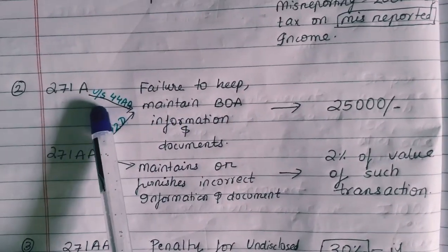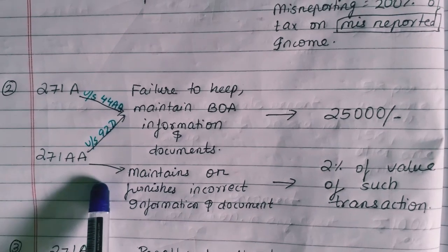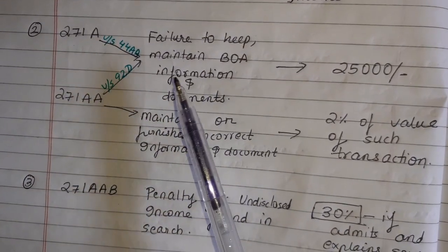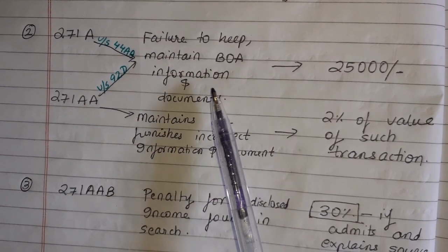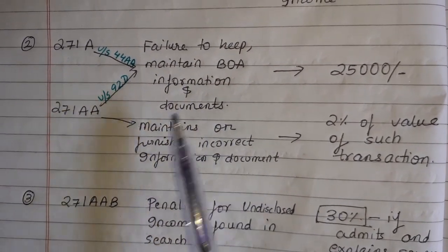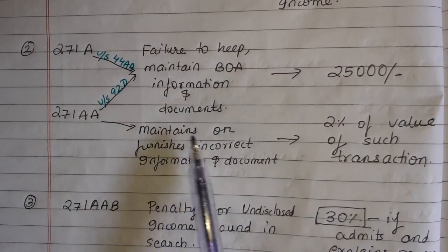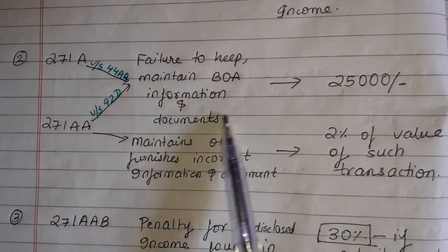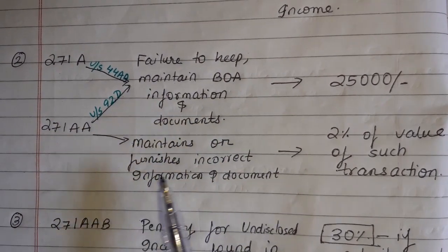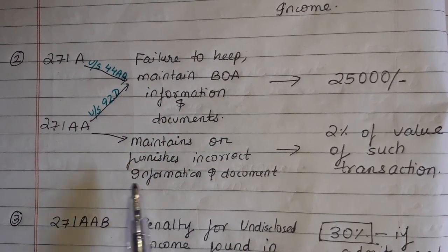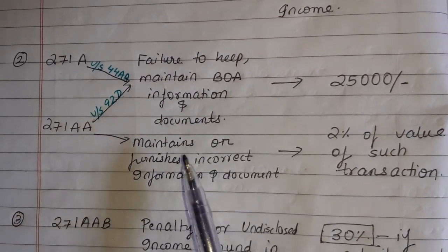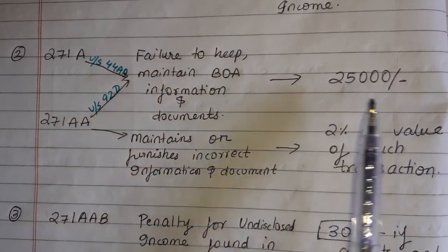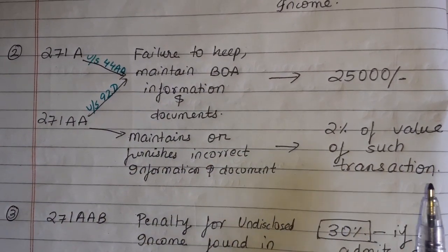Next is Section 271A and 271AA. Section 271A deals with failure to keep and maintain books of account, information, and documents. And 271AA additionally covers maintaining and furnishing incorrect information and documents. Either you don't maintain books of accounts and documents, or you maintain wrong information. For 271A, the penalty is ₹25,000. For 271AA, it will be 2% of the value of such transaction.